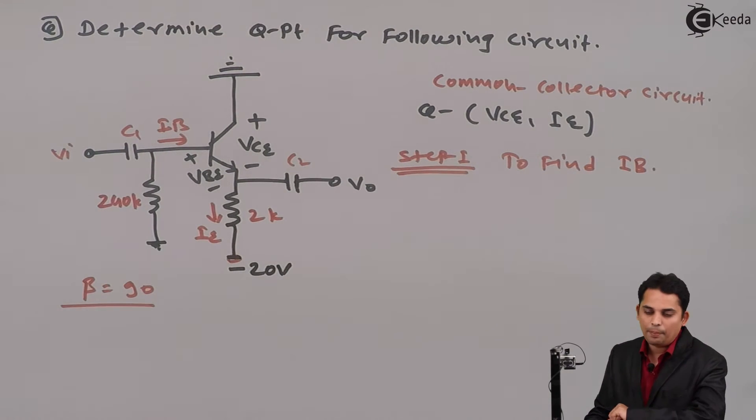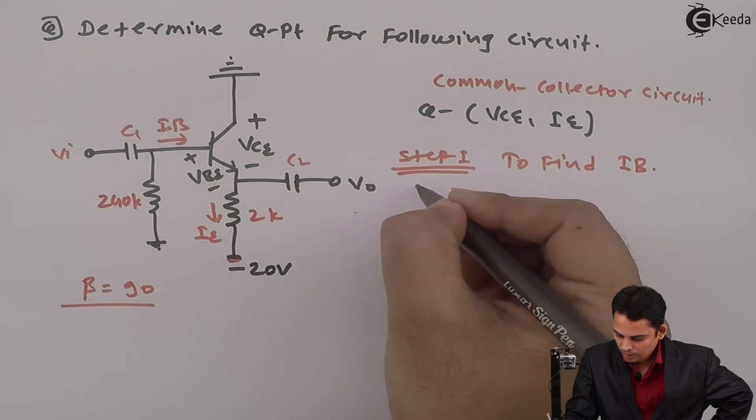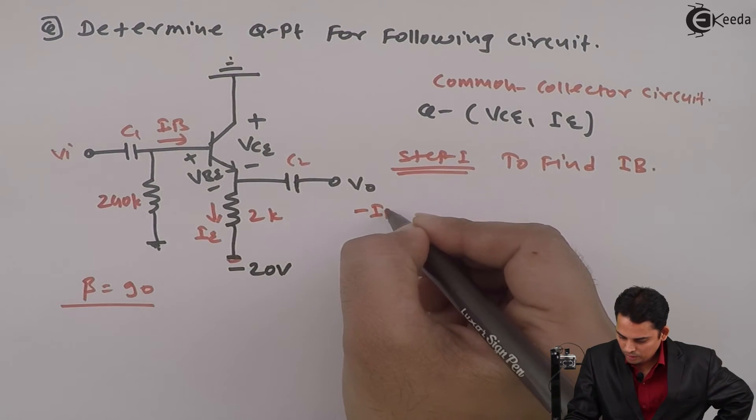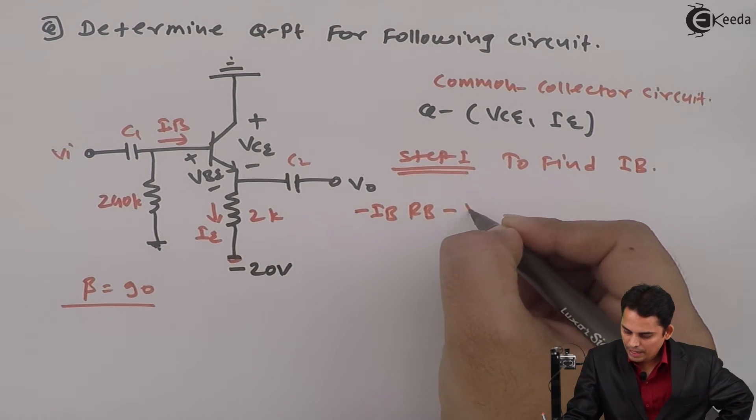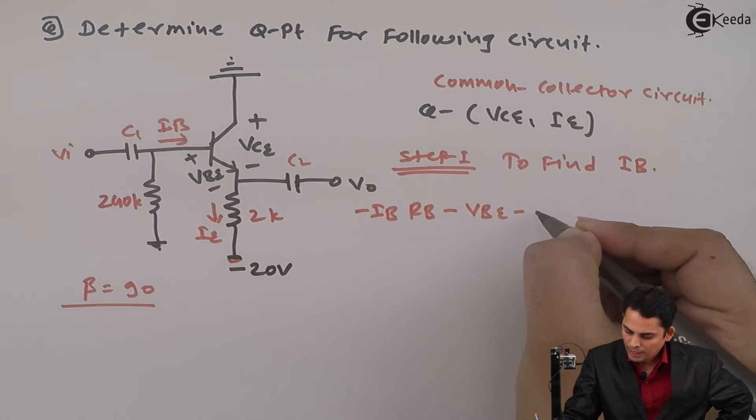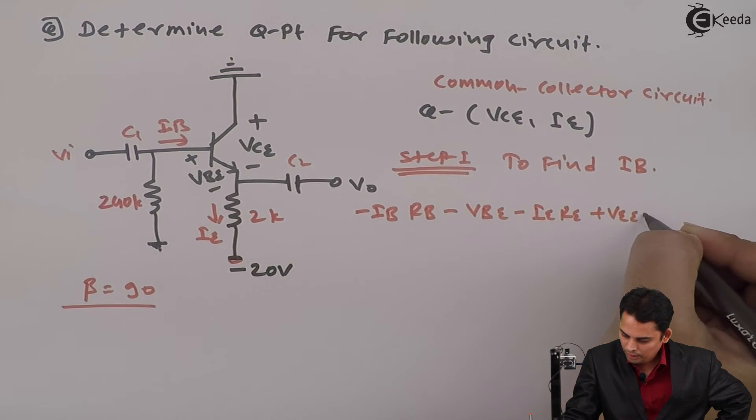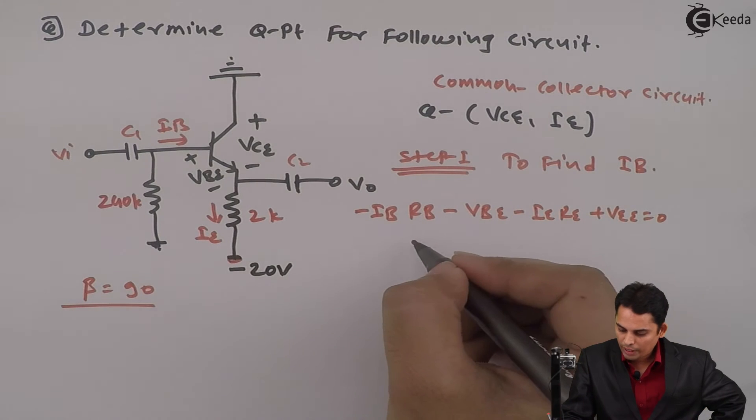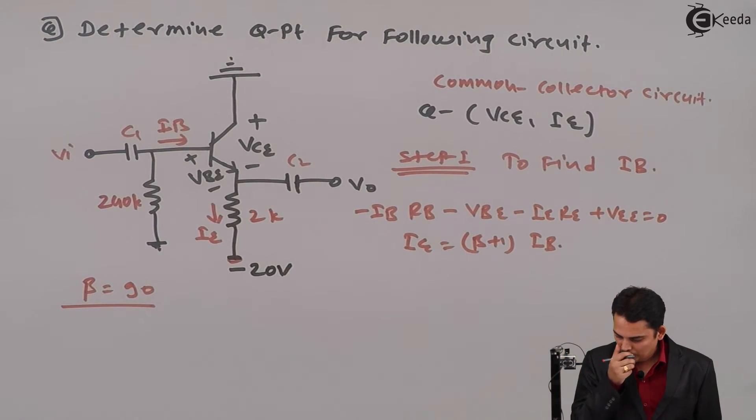If we apply KVL to the input, equation will become minus IB into RB minus VBE minus IE into RE plus VEE is equal to 0 where IE can be written as beta plus 1 times of IB.